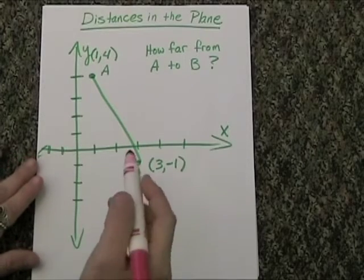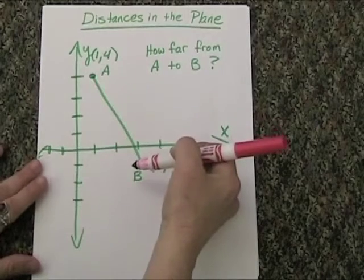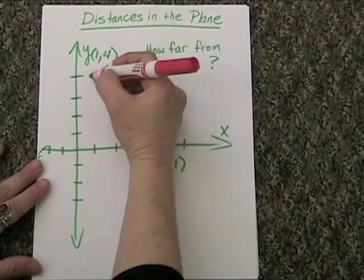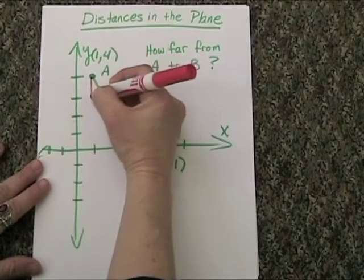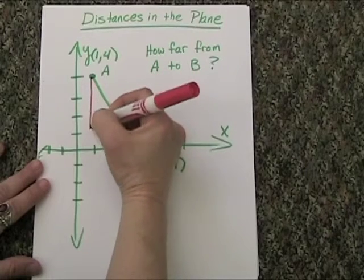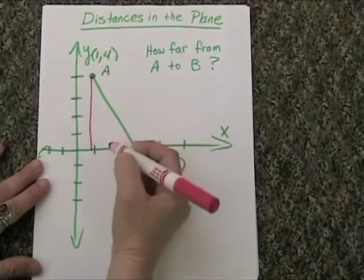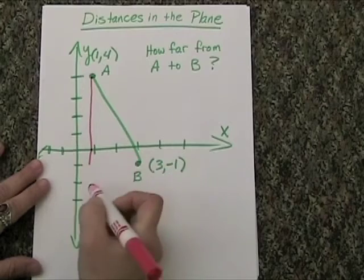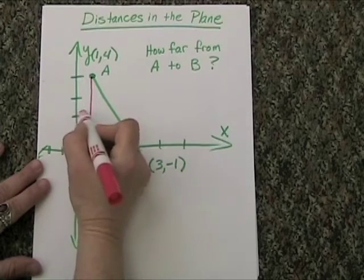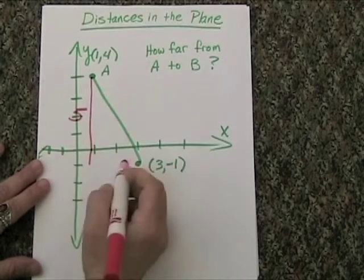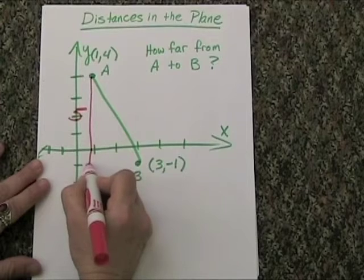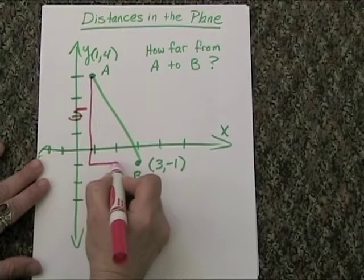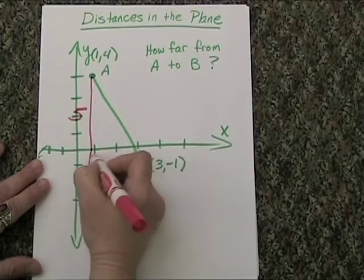Let's take a look here. To go from A to B, we are actually going to move down one, two, three, four, five steps. So we're going to go down five, and we're going to go over one, two.